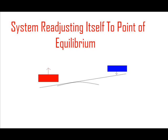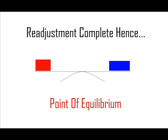So basically, a system will always seek the point of equilibrium. And so, a system will readjust itself to oppose the imposed change to return to a point of equilibrium.